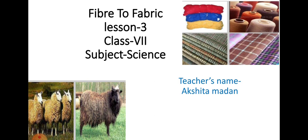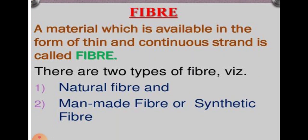This chapter is a very easy chapter. It is related to the material of our clothes, which we wear season-wise: in summer season, in winter season, and in rainy season. Let's start with two terms: fiber and fabric. Fiber means a material which is available in the form of a thin and continuous strand is called fiber.